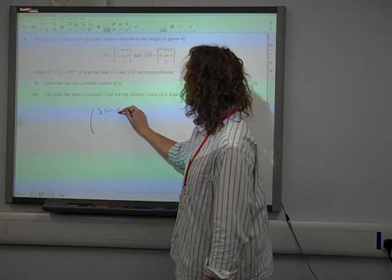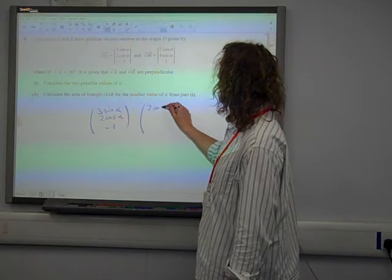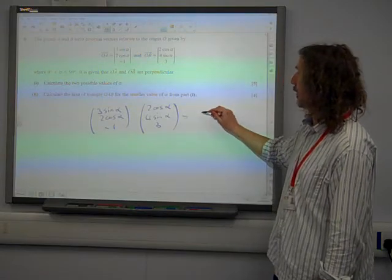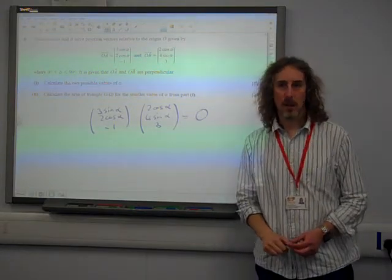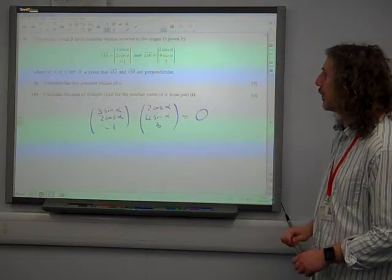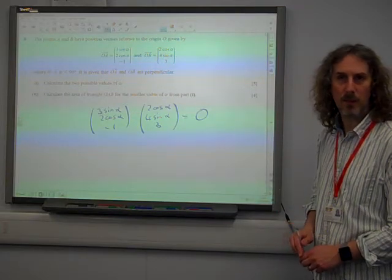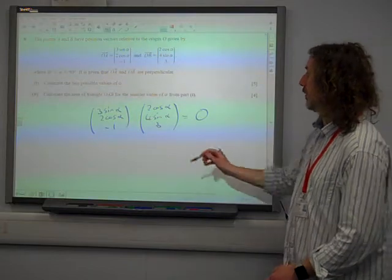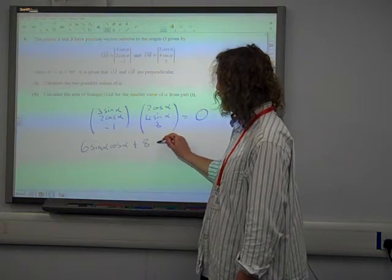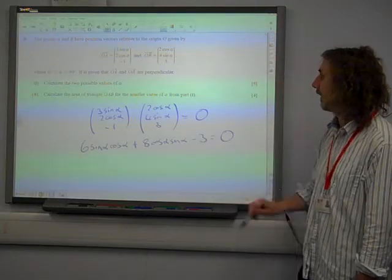So these two things have a zero scalar product. So three sine alpha, two cos alpha minus one, dotted with two cos alpha, four sine alpha, three, that equals zero. That's a crucial thing. So if we work this out, we should get something out of this.